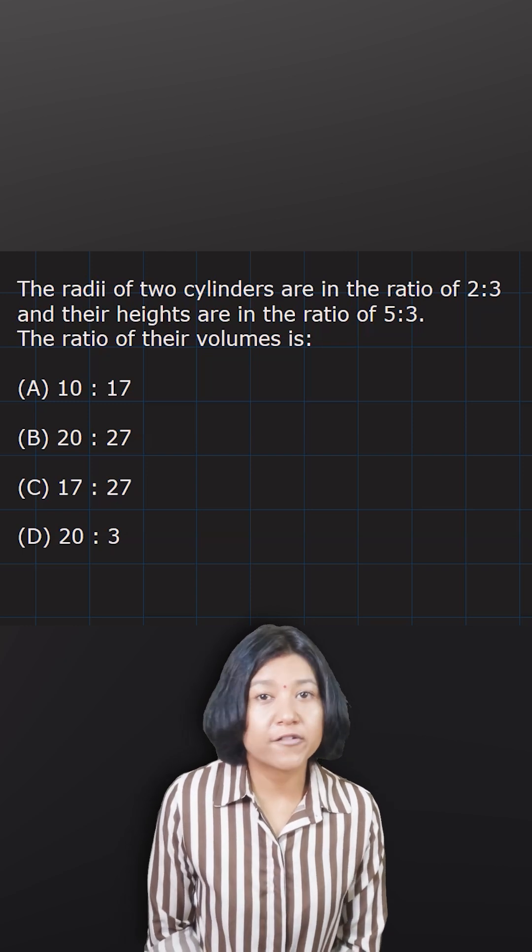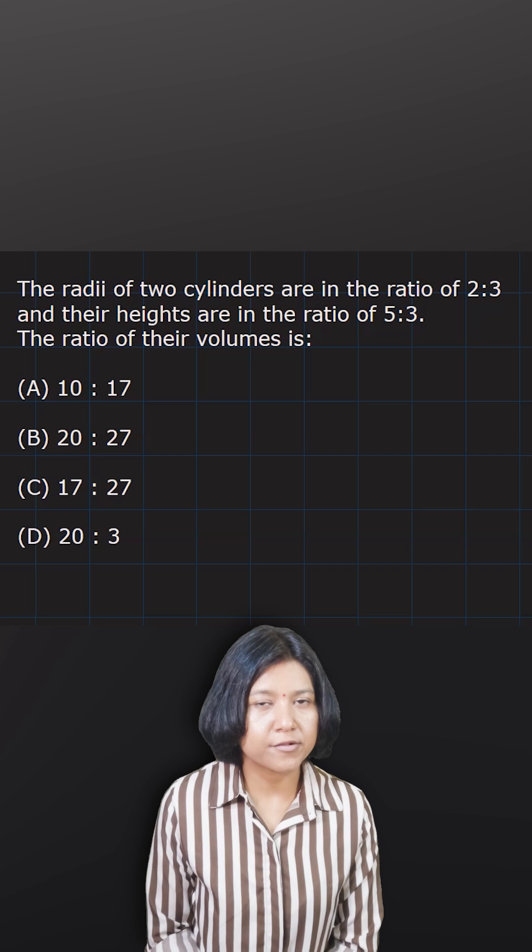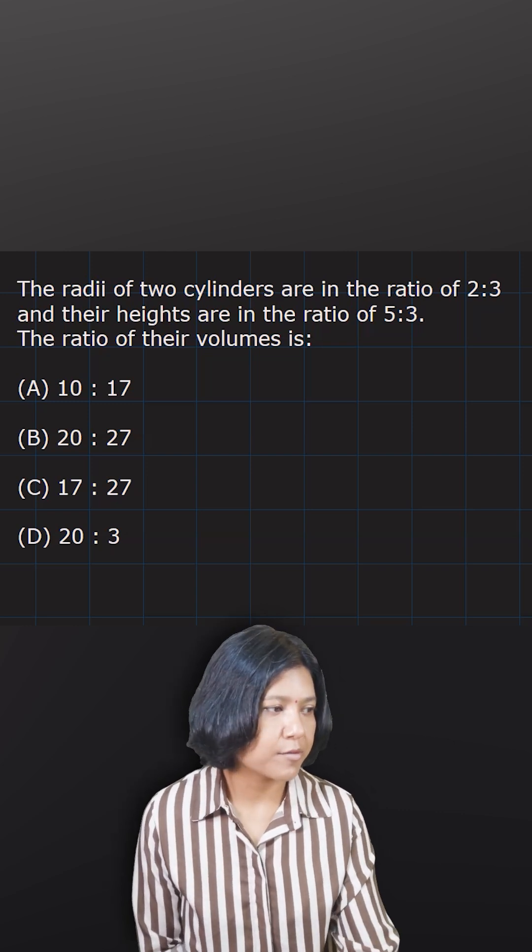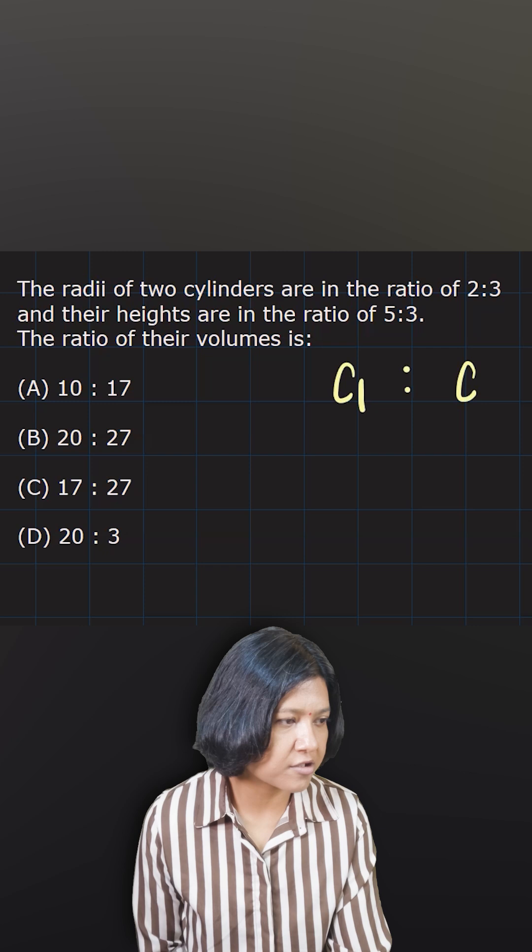You have been given the ratio of two radii for two different cylinders, along with the ratio of their heights. So let's say our cylinders are C1 and C2. According to the ratios that have been given to me, we are going to write that for the first one.